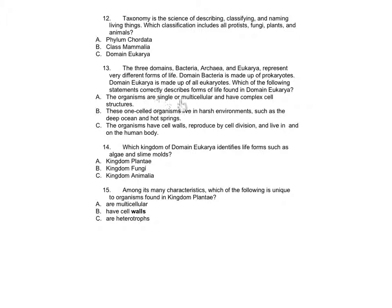A: The organisms are single or multicellular and have complex cell structures. B: These one-celled organisms live in harsh environments such as the deep ocean and hot springs. C: The organisms have cell walls, reproduce by cell division, and live in and on the human body. Number 14: Which kingdom of domain Eukarya identifies life forms such as algae and slime molds?